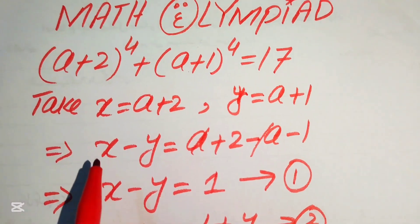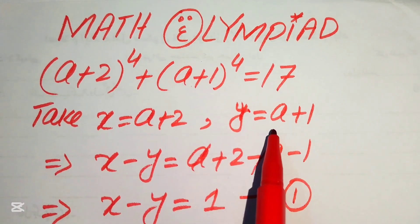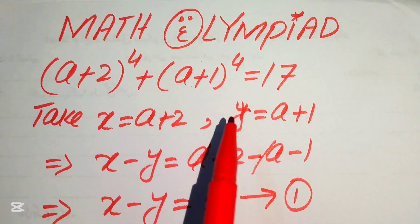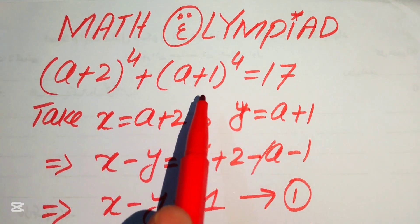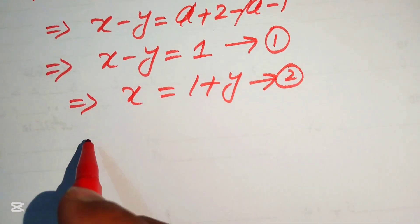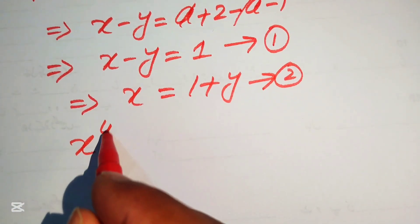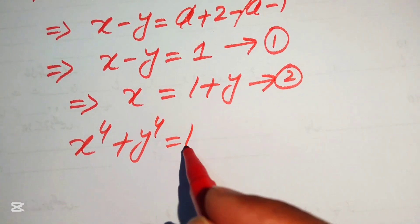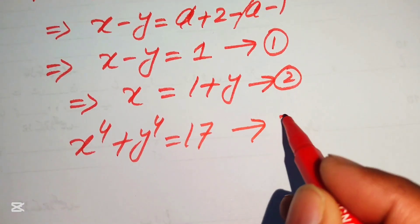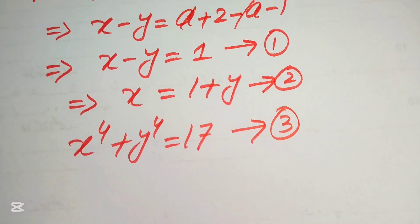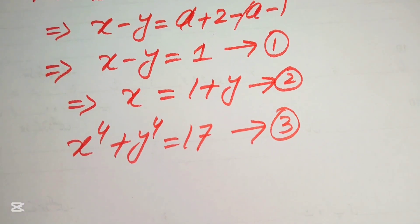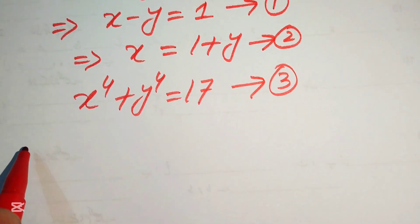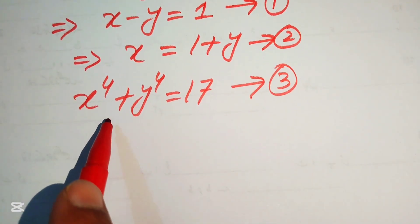Now we substitute these values into the given equation. With a+2 = x and a+1 = y, our equation becomes x⁴ + y⁴ = 17, which we call equation number 3. We now move forward with this equation by completing the square.